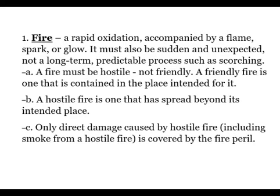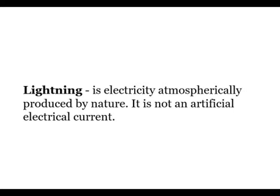The next peril is lightning. Lightning is electricity atmospherically produced by nature. It is not artificial electrical currents — it has to be lightning produced by nature. Lightning will typically cause fire or damage your home in certain ways, and if that is what causes the damage, it would be covered under the peril of lightning.